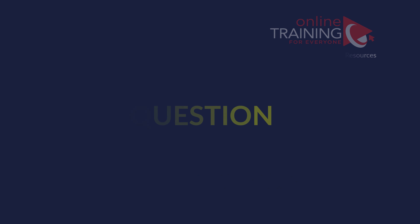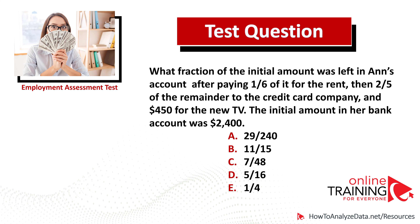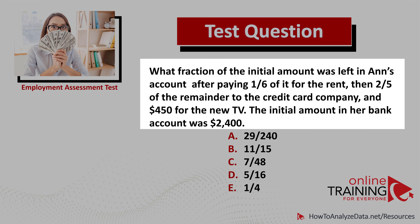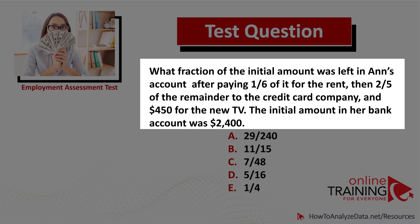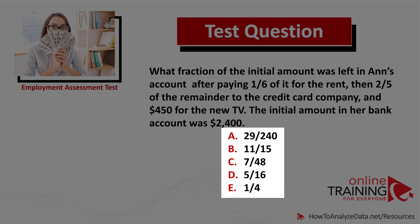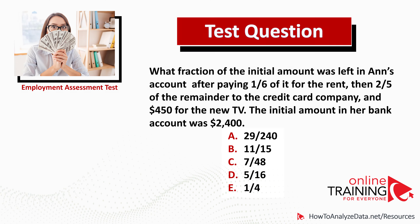Let's look at a tricky question frequently asked on the test, which tests your knowledge of money management and fractions. What fraction of the initial amount was left in Anne's account after paying one-sixth of the rent, then two-fifths of the remainder to the credit card company, and $450 for a new TV? The initial amount in her bank account was $2,400. You are presented with four choices: 29/40, 11/15, 7/48, 5/16, and one-fourth.